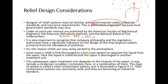A knockout system is like knocking out a boxer - it stops the relief stream. Then you treat it. The subsequent vapor treatment depends on the hazards involved. It may include a condenser, scrubber, adsorption unit, incinerator, flare for burning before atmospheric discharge, or any combination. This entire system is called a total contaminant system, and such systems are becoming standard.